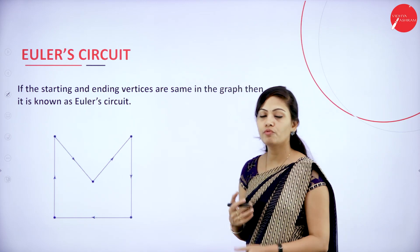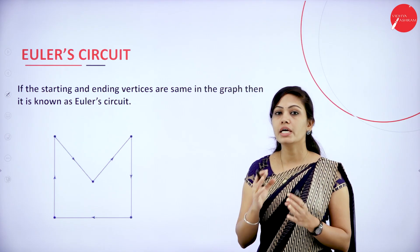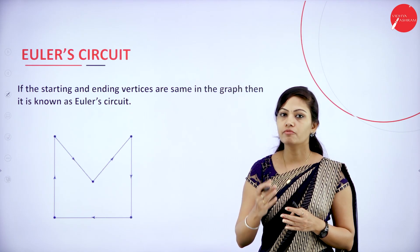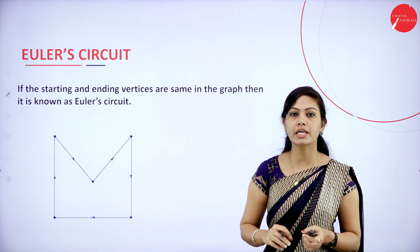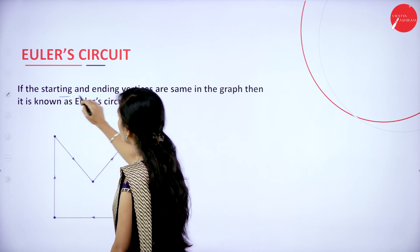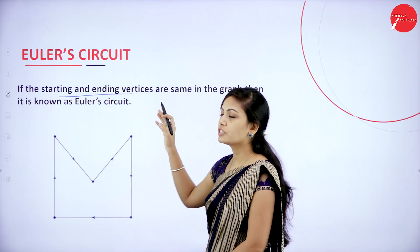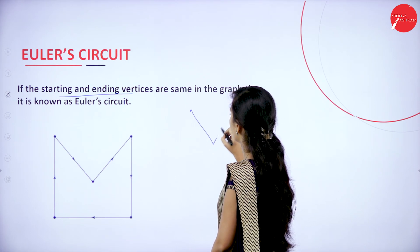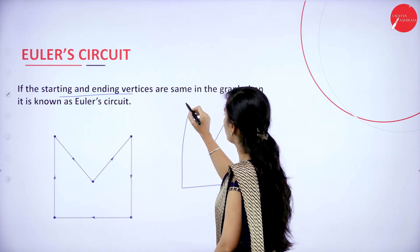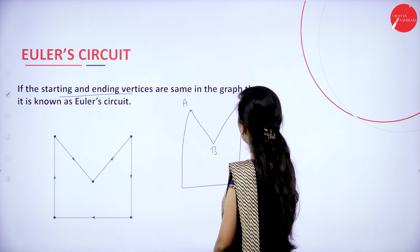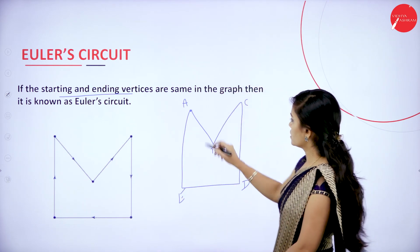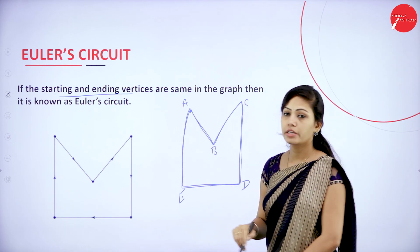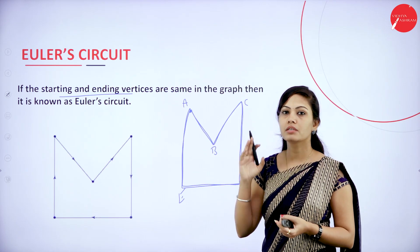Next is Euler's circuit. First you have to understand what a circuit is. Circuit is a closed path. Closed path means the starting vertex point and ending vertex point should be the same, and vertices can be repeated but edges cannot be repeated — that is called as circuit. So in Euler's circuit, if the starting and ending vertices are the same in the graph, it is known as Euler's circuit. Starting and ending vertex should be same: A, B, C, D — ending point also the same. Vertex can be repeated but edges cannot be repeated. That is called as Euler's circuit.